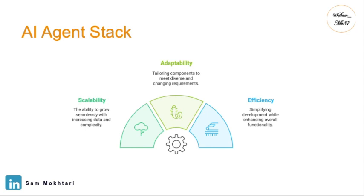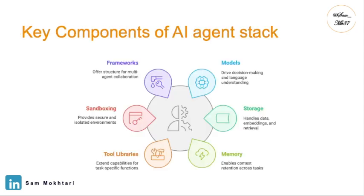Let's dive deeper into each individual component of the AI agent stack. The key components include things like the model, which drives decision making and language understanding; storage, which handles data embedding and retrieval for efficient operation; and memory, which enables context retention across tasks and interactions. These six main components together build the whole AI agent stack.